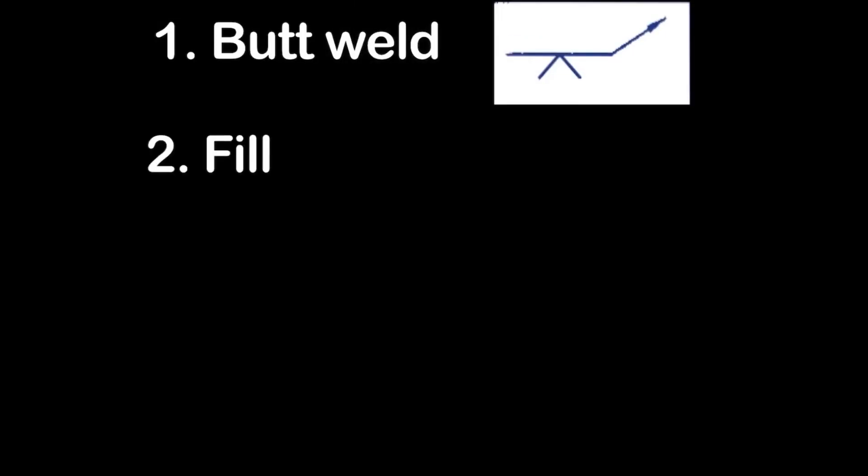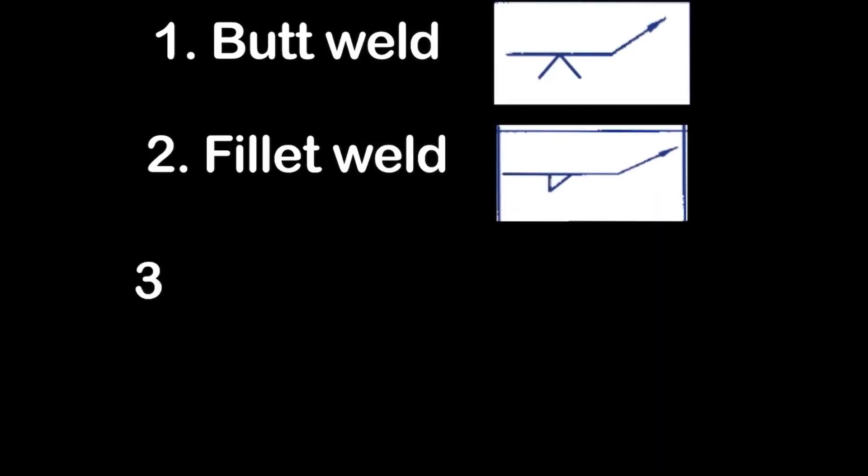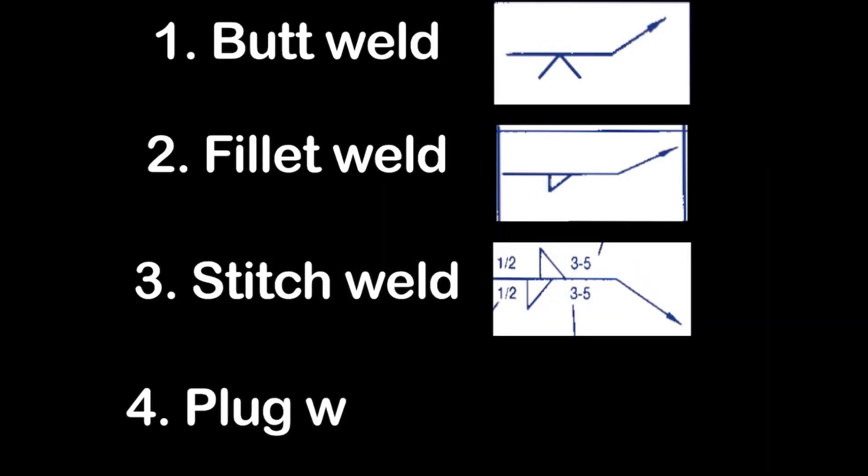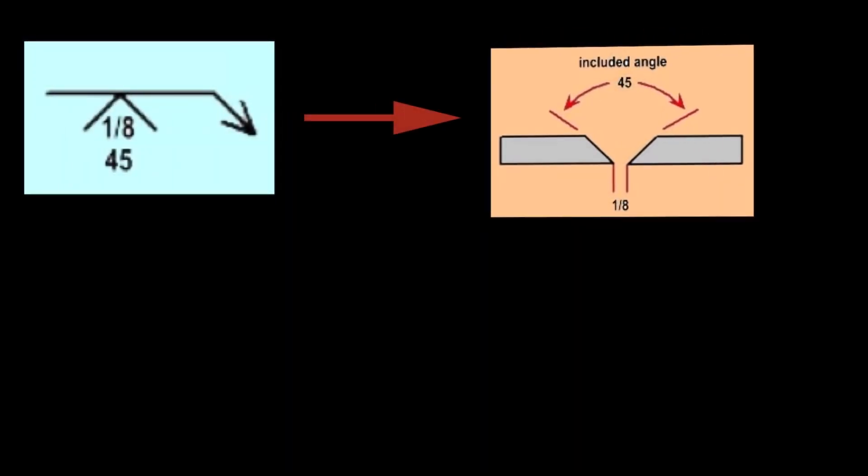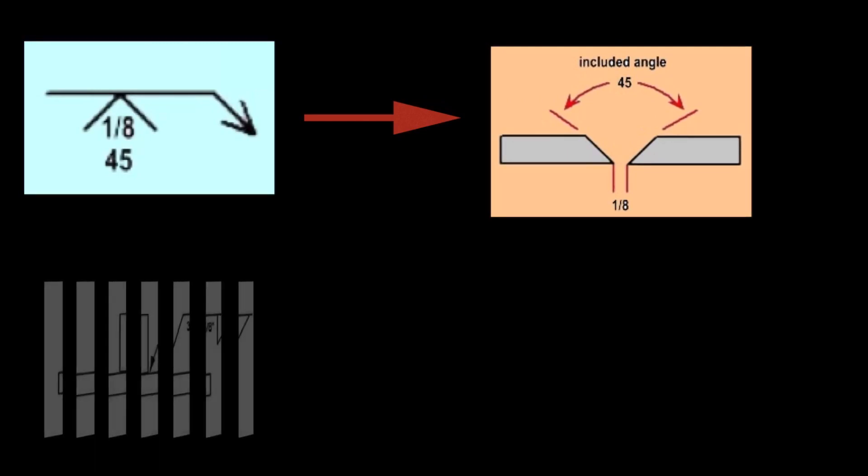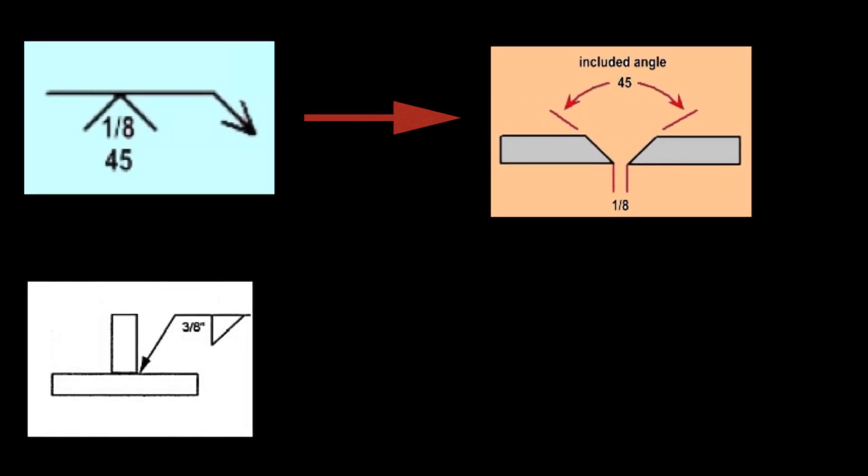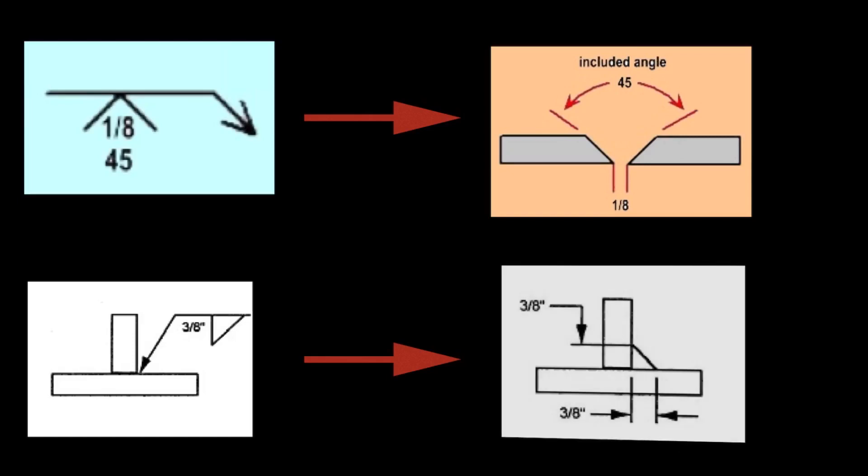Butt welding, fillet welding, stitch welding, and plug welding. For example, here 1/8 indicates the root gap and 45 indicates the included angle of the butt joint. And second one, that fillet joint, 3/8 indicates the length of the leg.